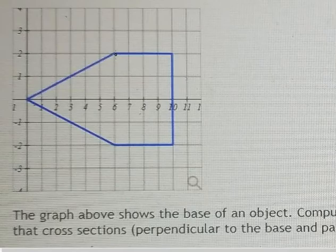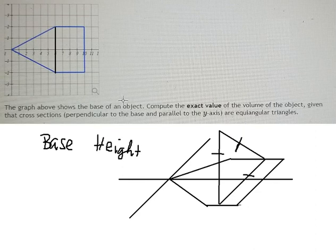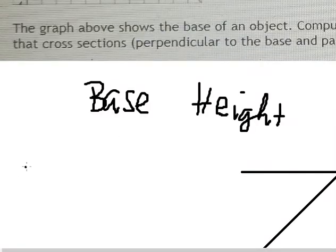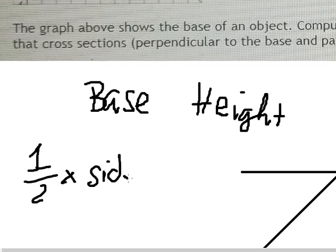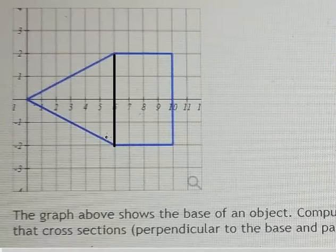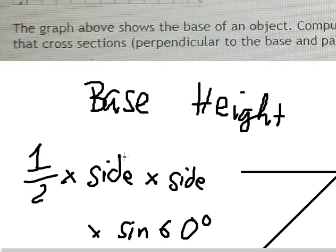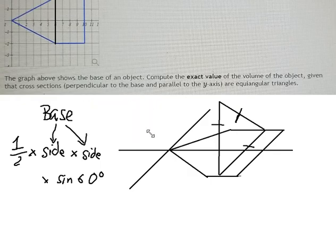I will divide this region into two sections: from 0 to 6, and from 6 to 10. We can use the formula: area equals one-half times side times another side, times sine of 60 degrees. For equilateral triangles, all sides equal the base, so we use the second method to find the area.